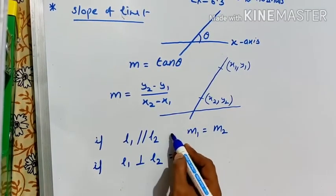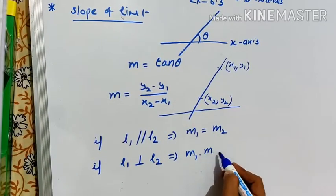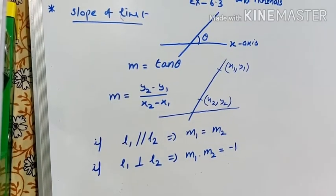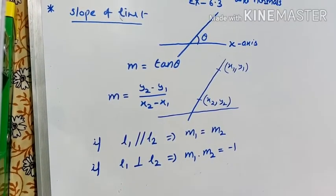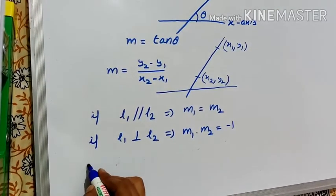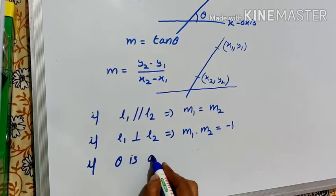If lines are perpendicular, this implies m1 dot m2 is equal to minus 1, where m1 is the slope of line 1 and m2 is the slope of line 2.